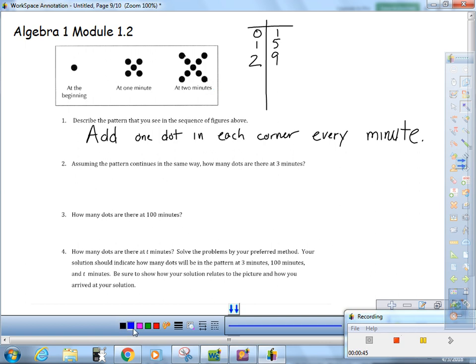So I think I see the pattern. It's going up by four every time. So after three minutes, and notice this is what it says, we're adding a dot to each corner. There are four corners, so after three minutes there will be thirteen dots.